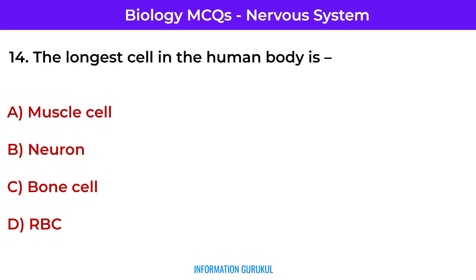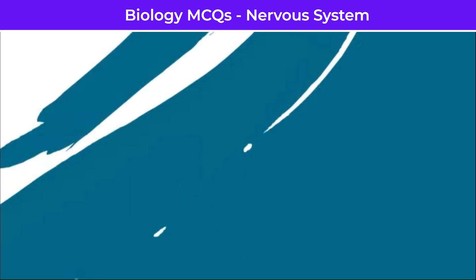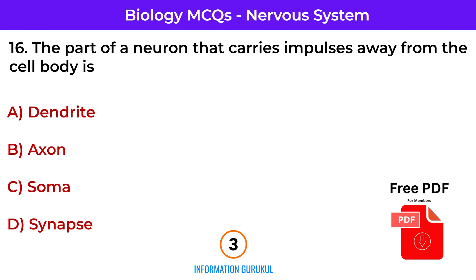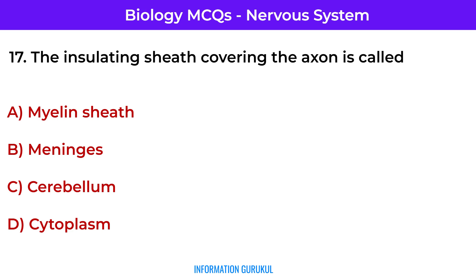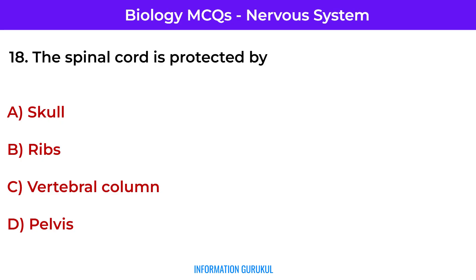The longest cell in the human body is the neuron. The gap between two neurons is called a synapse. The part of a neuron that carries impulses away from the cell body is the axon. The insulating sheath covering the axon is called the myelin sheath. The spinal cord is protected by the vertebral column.